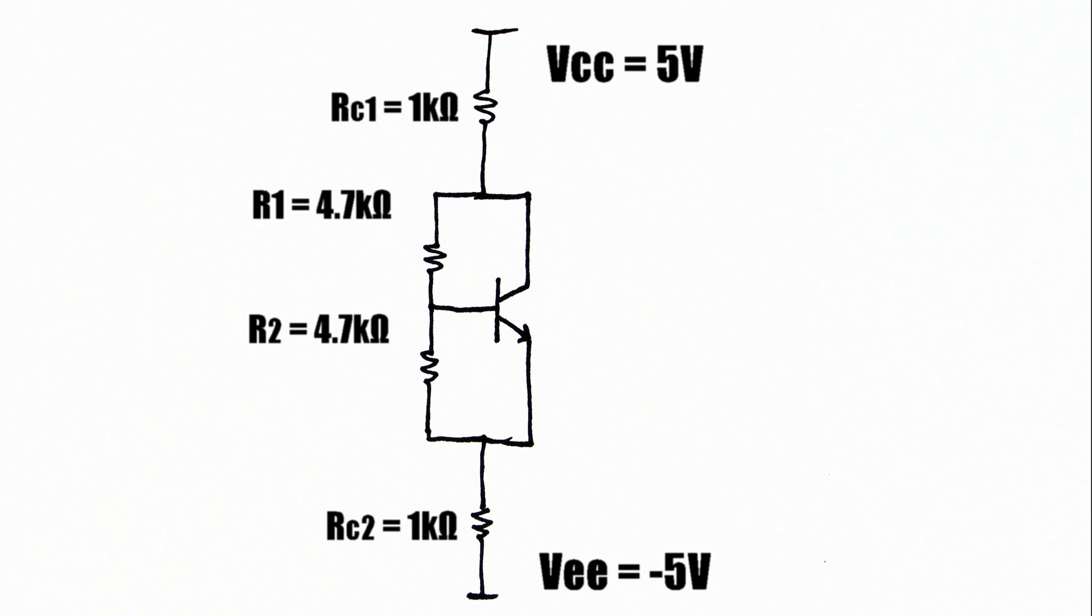I added two additional components here, which are current source resistors at the bottom and top of the VBE multiplier. Their value is 1 kilo ohm, and I chose equal value resistors of 4.7 kilo ohms for R1 and R2.